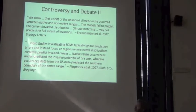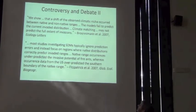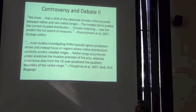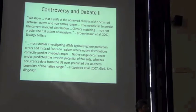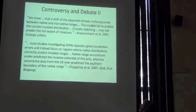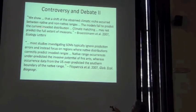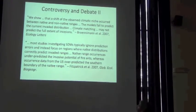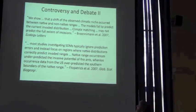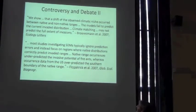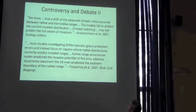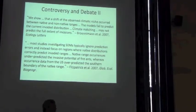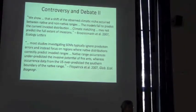So the controversy and the rhetoric continues. We show that the shift of the observed climatic niche occurred between native and non-native ranges. So here's an invasive species that's apparently shifted its niche. We'll come back to that example. The models fail to predict the current and native distribution. Native range occurrences underpredicted the invasive potential of fire ants, whereas occurrence data from the US overpredicted the southern boundary of the native range. So here we have two seeming counter examples to this idea of niche conservatism.